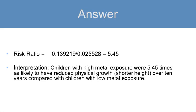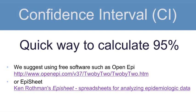Now, how do you calculate the 95% confidence intervals associated with this risk ratio? One possibility is with this free software, and you could either use OpenEpi or EpiSheet, and the two links are provided here.